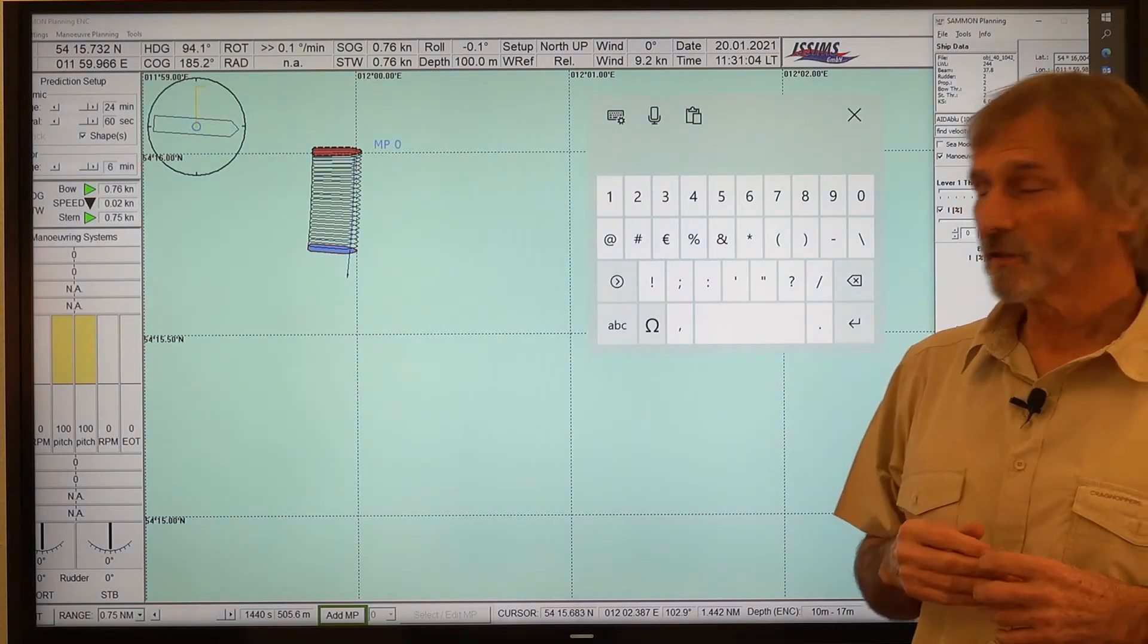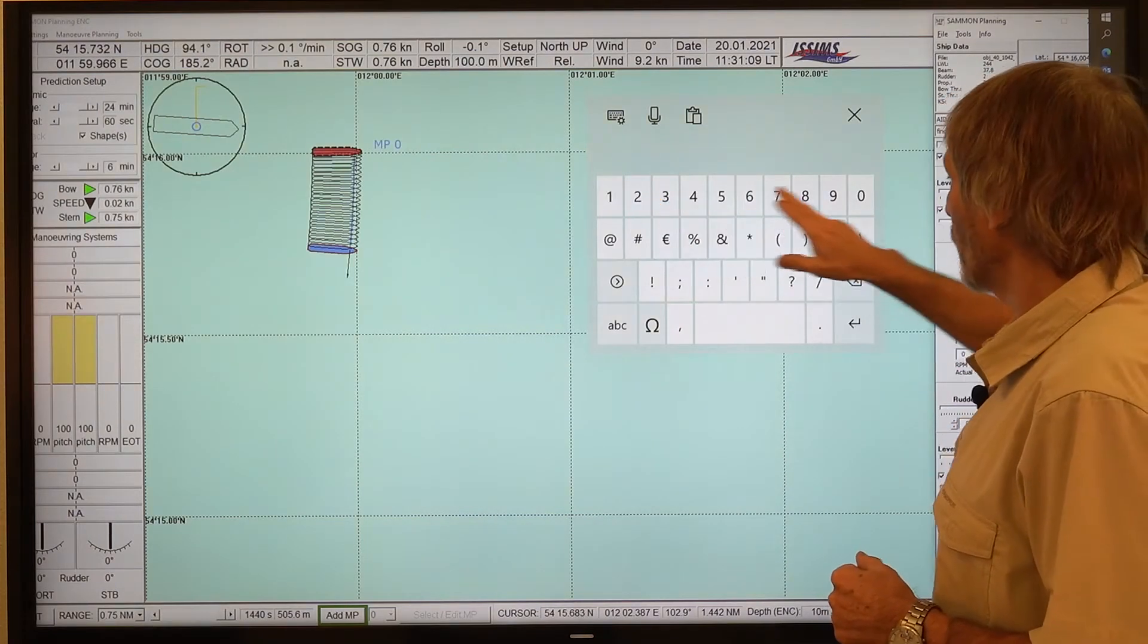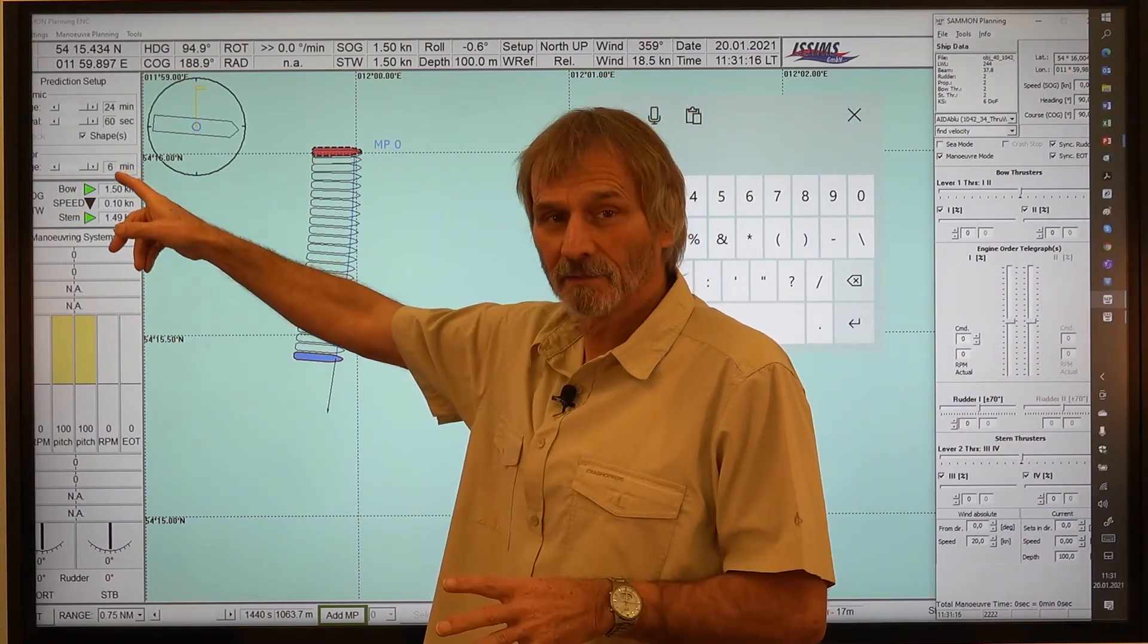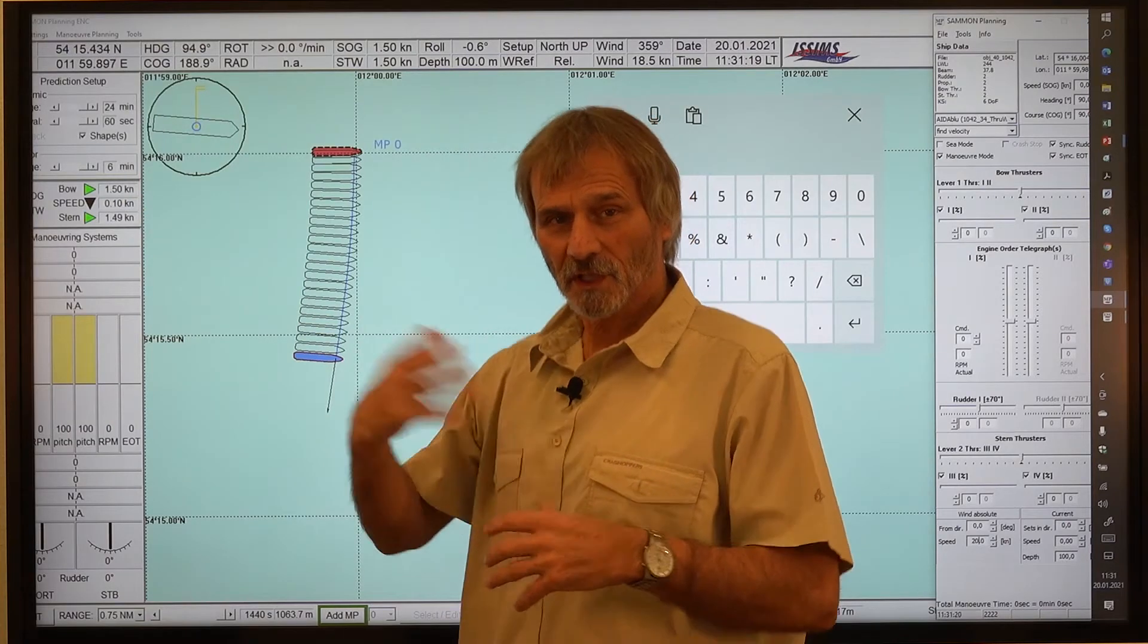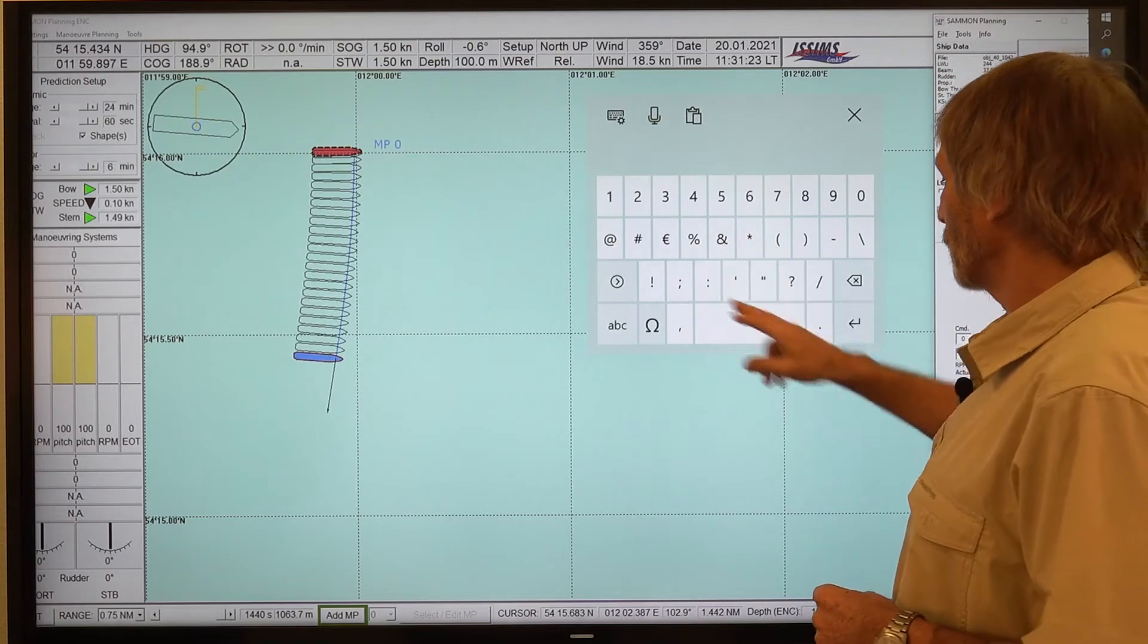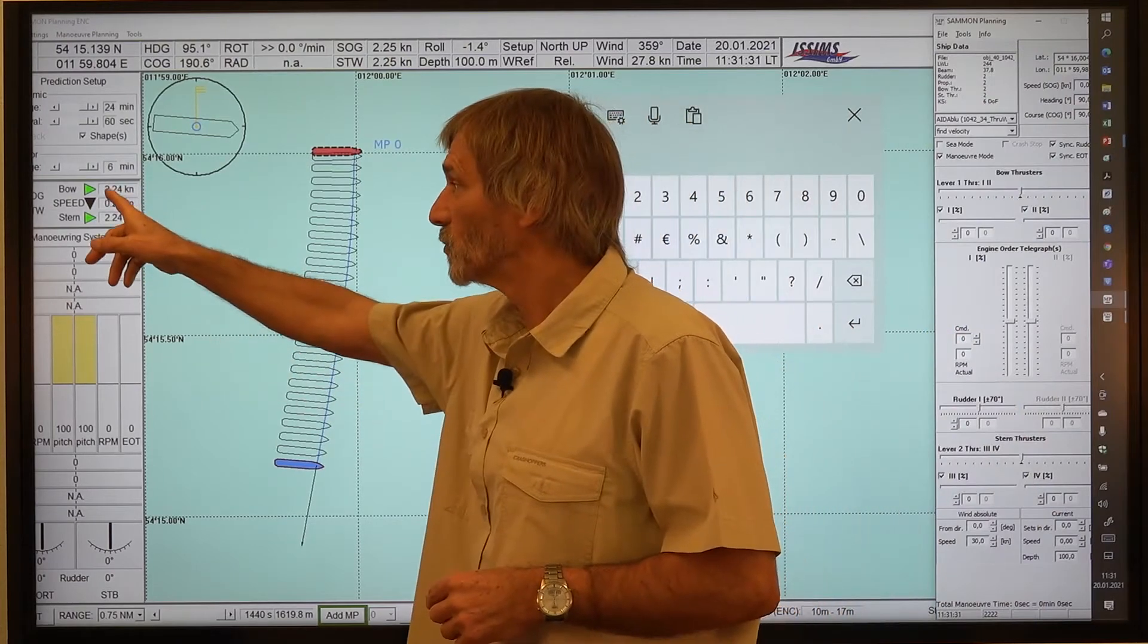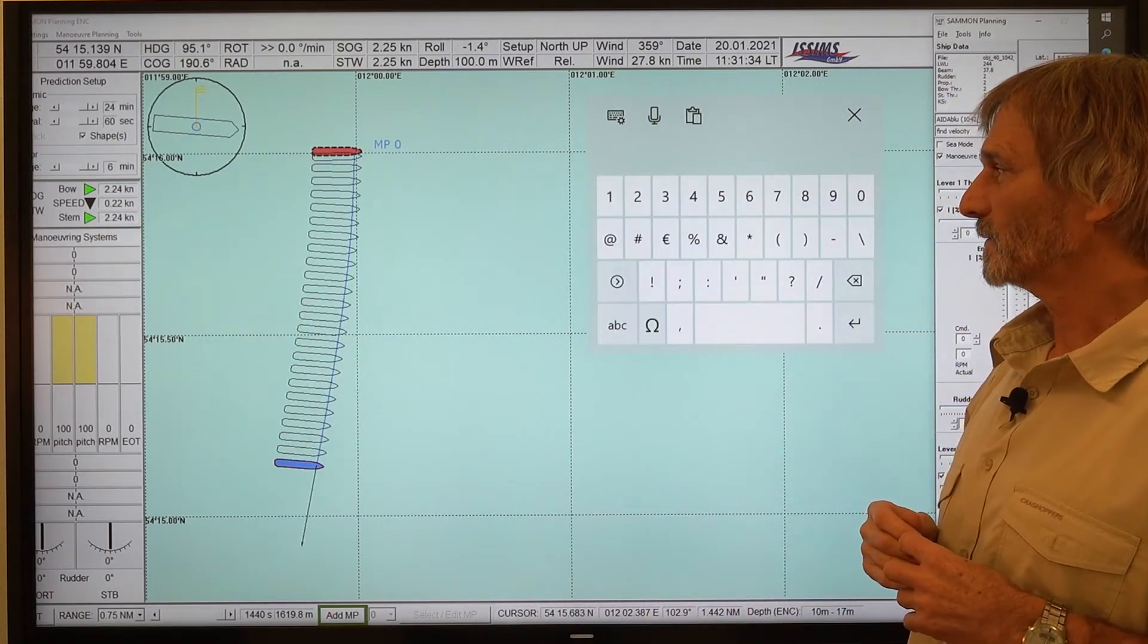And then we change it again, let's say to 20. So the final drift speed is double. It's 1.5 knots. So it's increasing. And if we would look to 30 knots, then we finally arrive with 2.2, 2.25 knots.